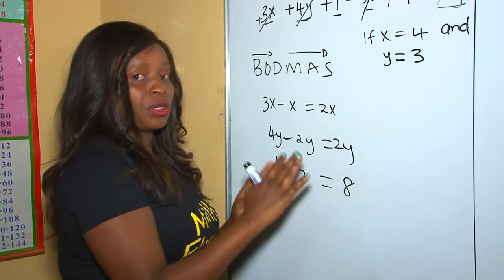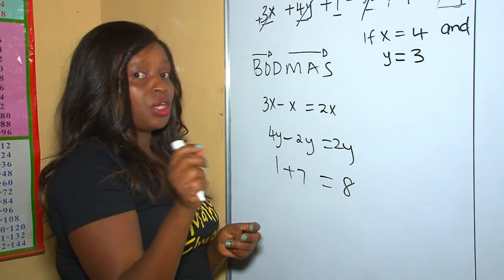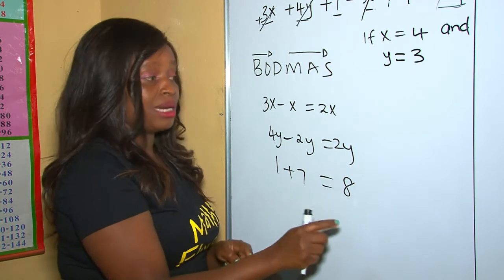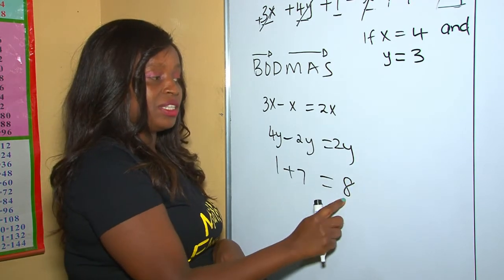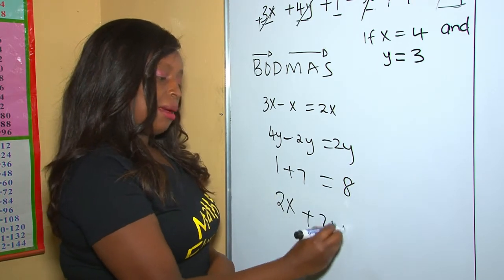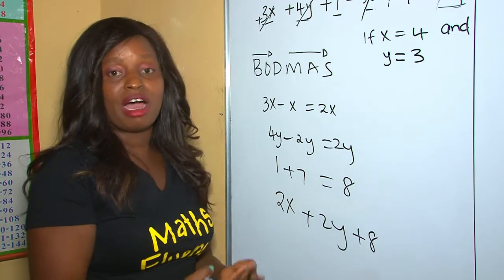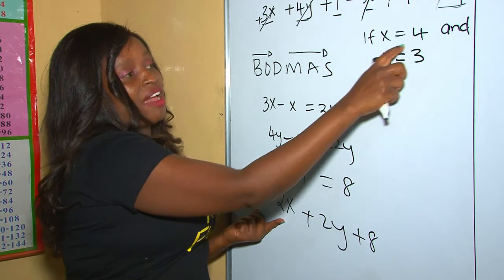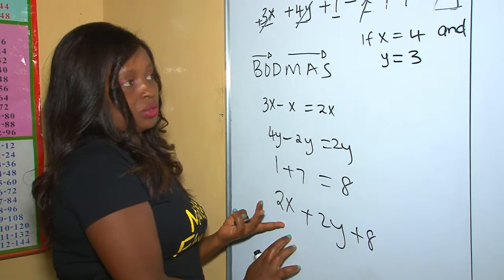But remember, you can't add 2x, 2y, and 8 together because they are not like terms — they are different terms. So we just combine them using the addition sign but don't add them, simply because they don't have the same terms. Now after getting this, we evaluate — we substitute the given values into the expression.